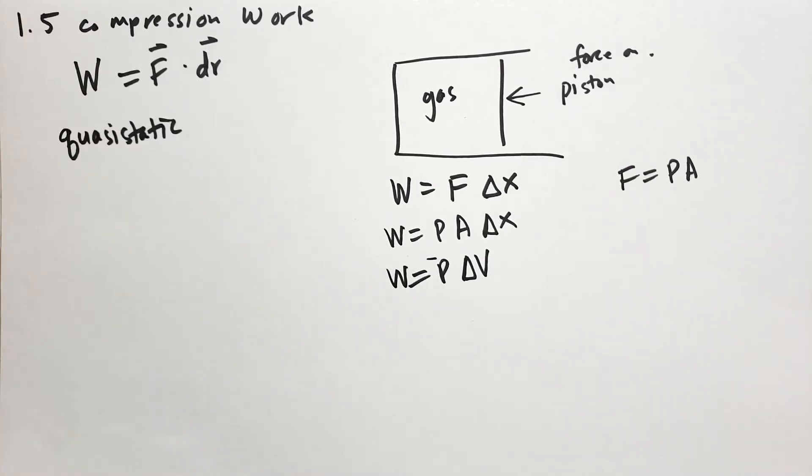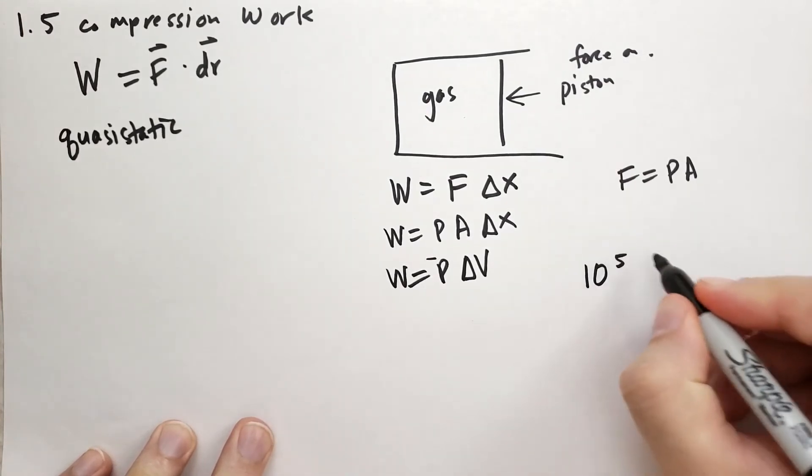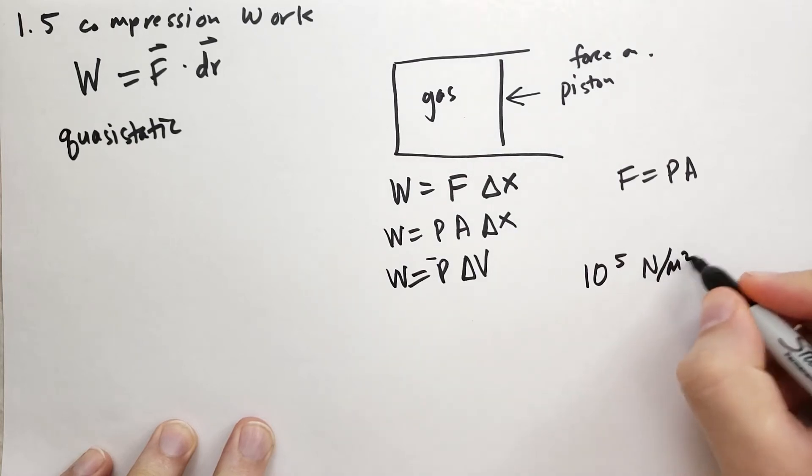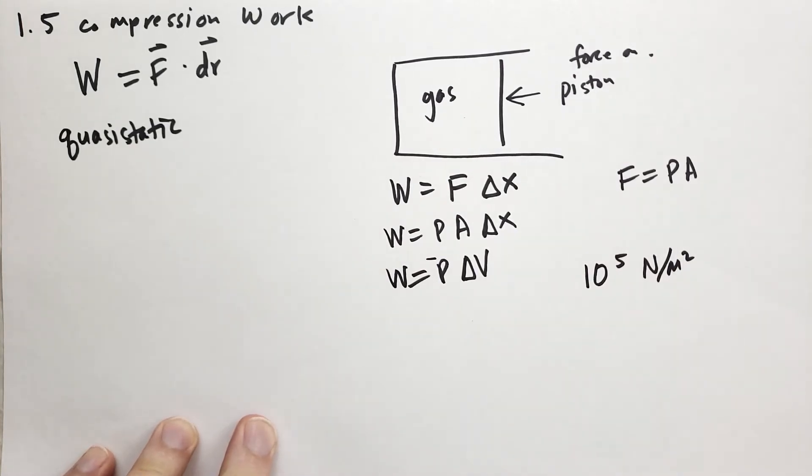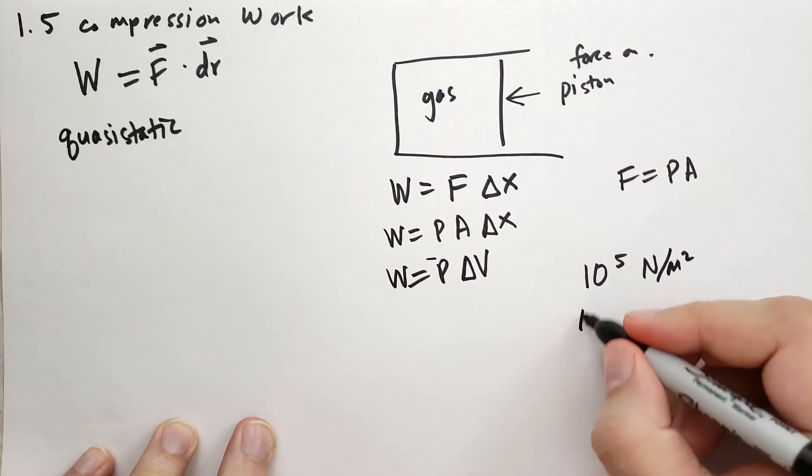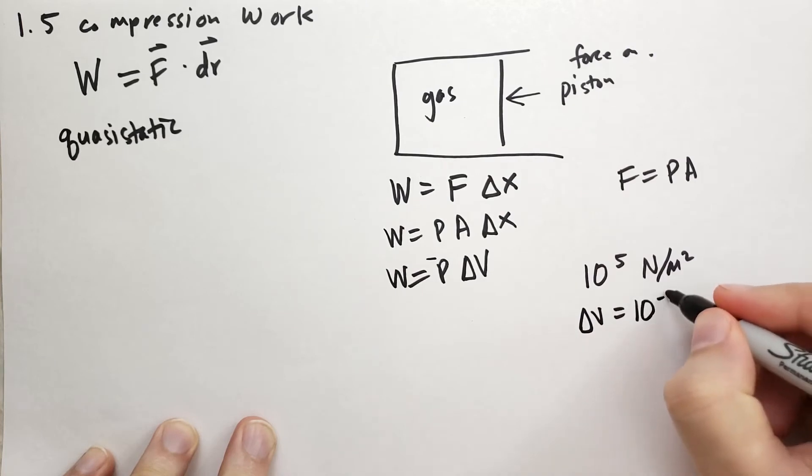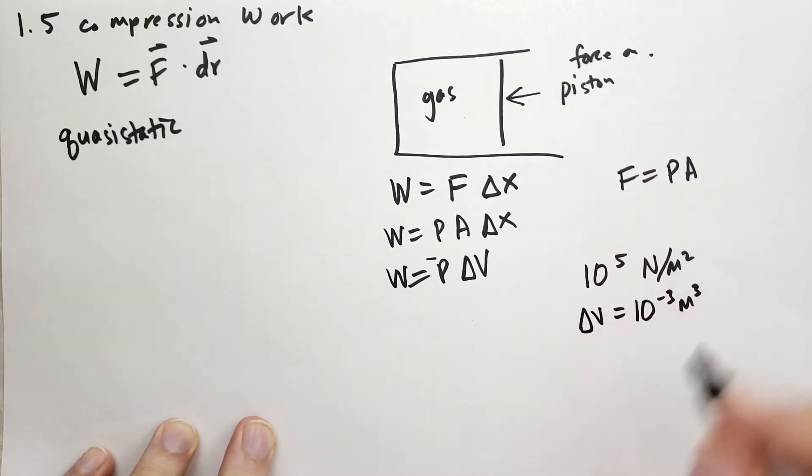He gives a quick example here in the book. He says we have a tank of air at atmospheric pressure, which is 10 to the fifth newton meters squared. And if we were to reduce the volume, so we're going to change the volume by a very small amount, 10 to the minus three meter cubed, one liter I think that is. So we're reducing the volume by one liter.